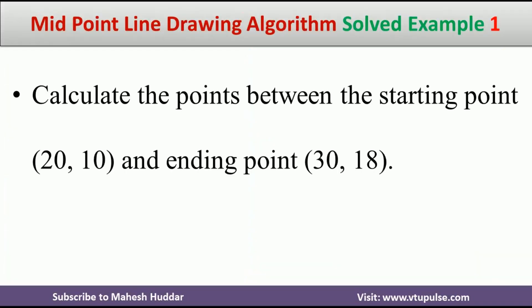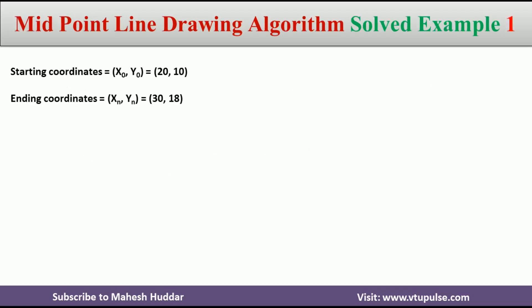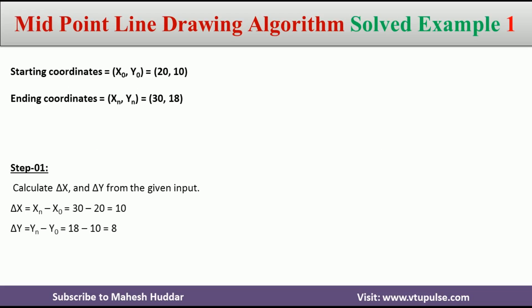In this case, we have been given the starting point as (20, 10) and end point as (30, 18). That is x0, y0 is (20, 10) and xn, yn is (30, 18). Given these start and end points, first we need to calculate a few parameters: delta_x and delta_y. Delta_x is equivalent to xn minus x0, which is 30 minus 20 equals 10. Delta_y is equivalent to yn minus y0, which is 18 minus 10 equals 8.